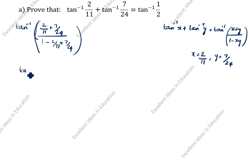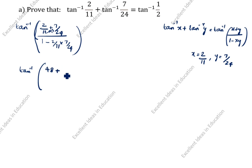Tan inverse of — cross multiplying — 24 into 2 is 48, and 7 into 11 is 77, over 11 into 24.